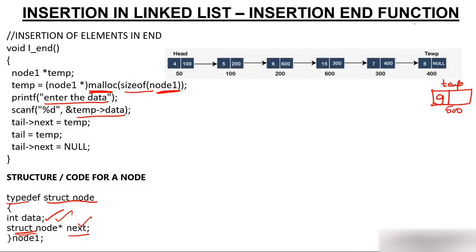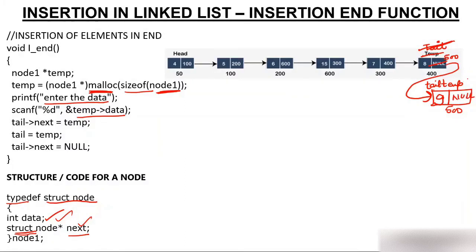Now we need to make the connection. The current tail node's next pointer — tail->next — was previously null, but now it will hold the address of the new node, which is 500. So tail->next = temp, meaning tail->next now points to the new node. Then we set tail = temp, because the new node becomes the new tail. Finally, tail->next = null since there is no node after the new tail.